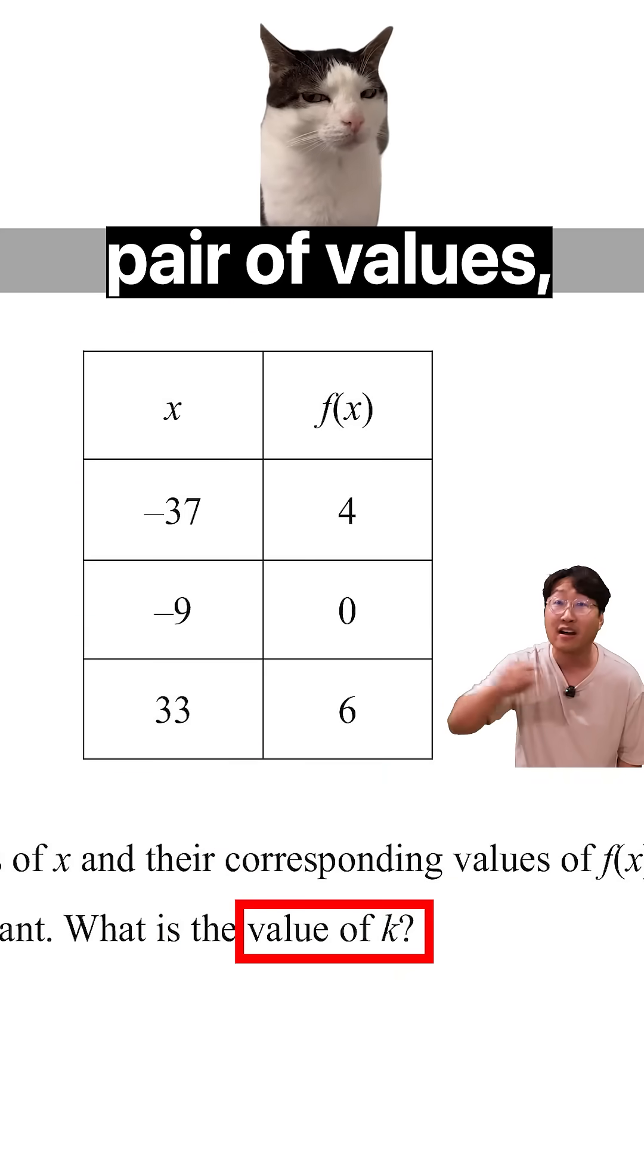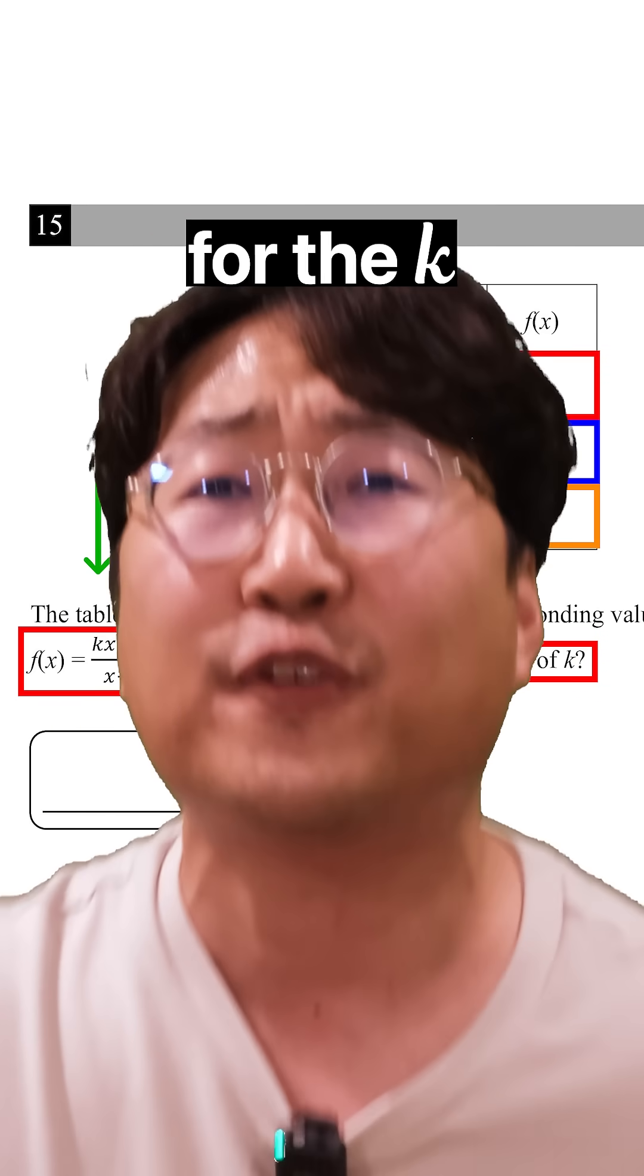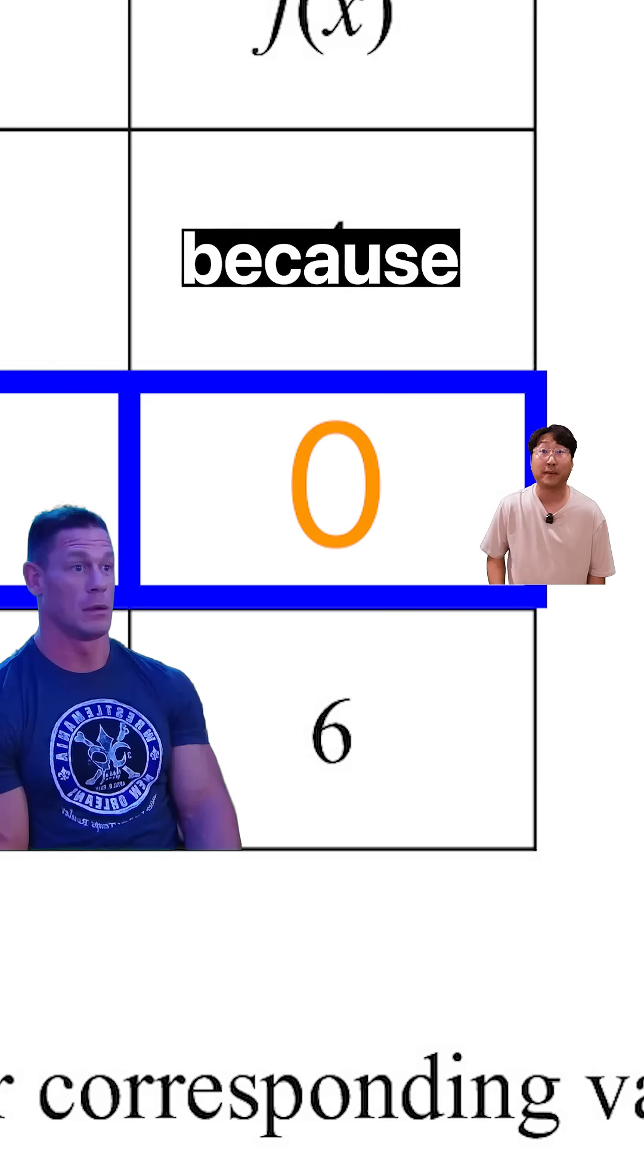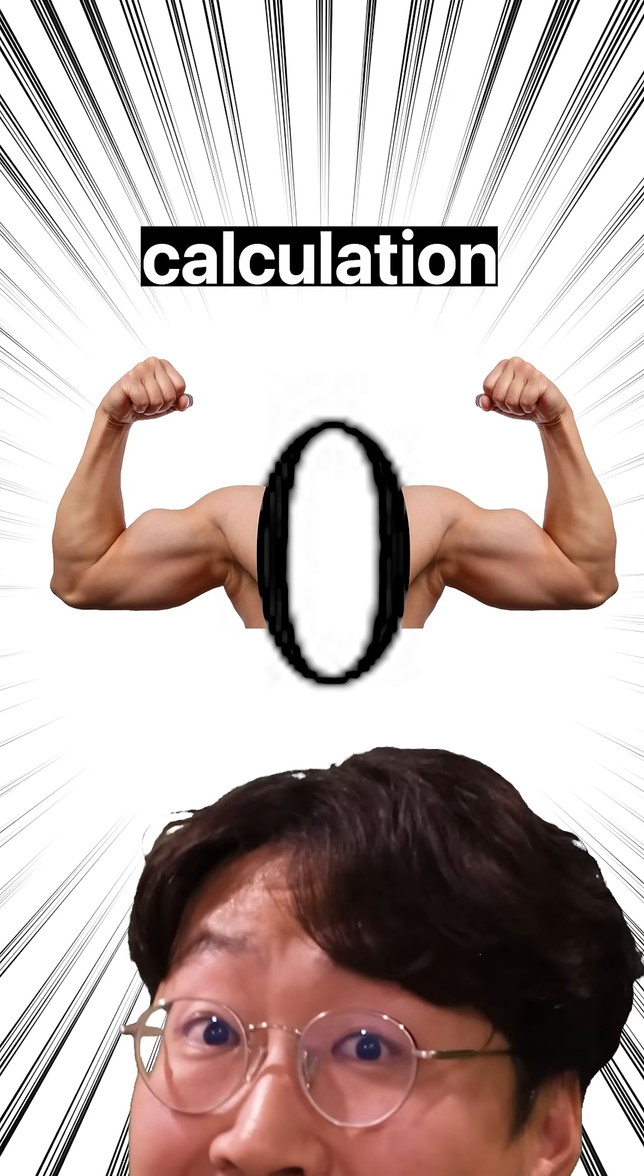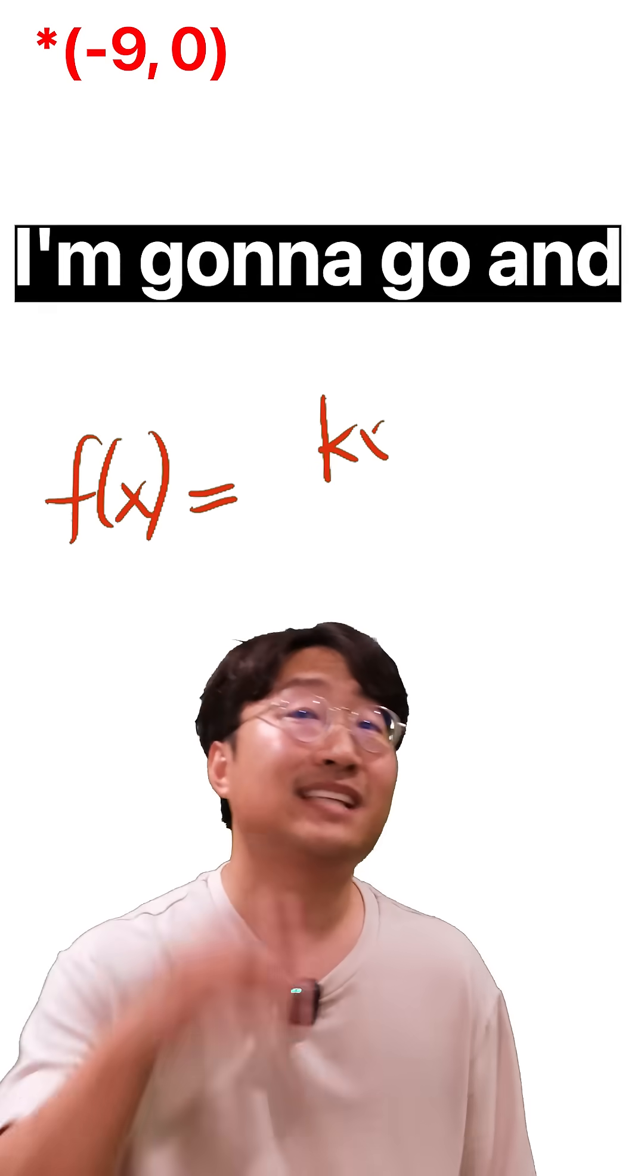See what that's going to give you for the k. In this case, I'm going to go ahead and pick that negative 9 comma zero, because it's got that zero, so perhaps that will make my calculation a bit easier. So let's go broskies, I'm going to go ahead and plug in negative 9 for the x and 0 for the f(x).